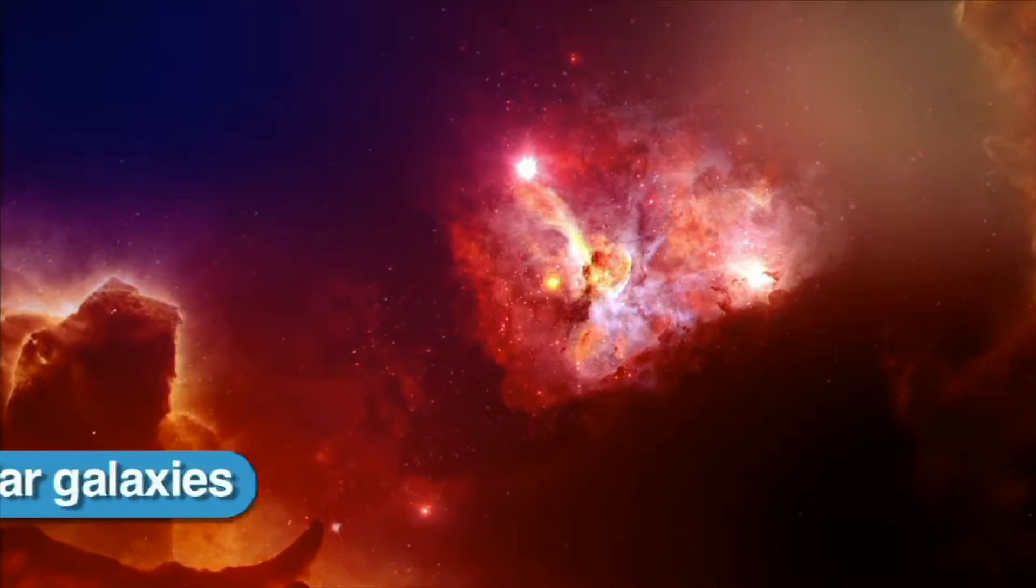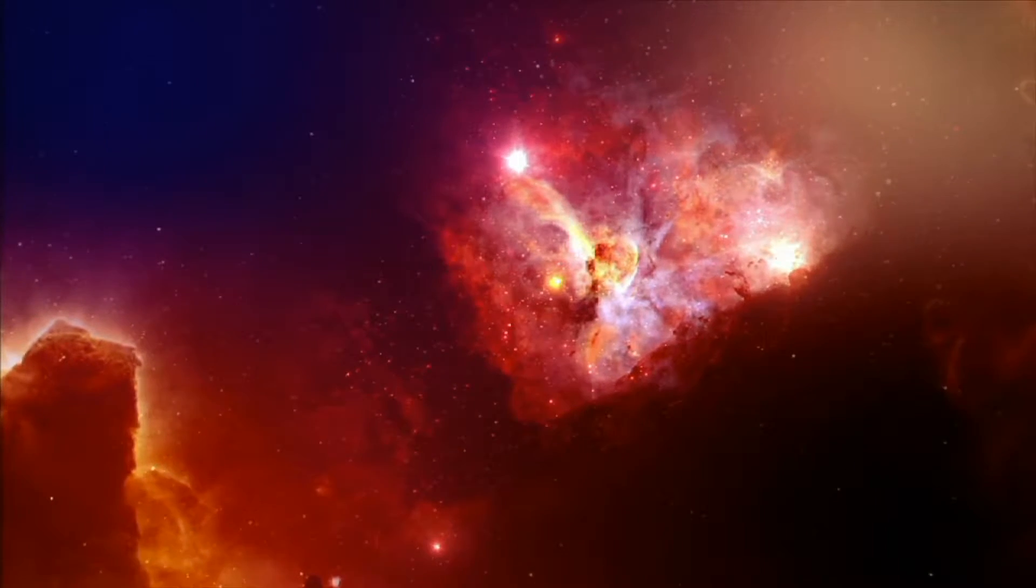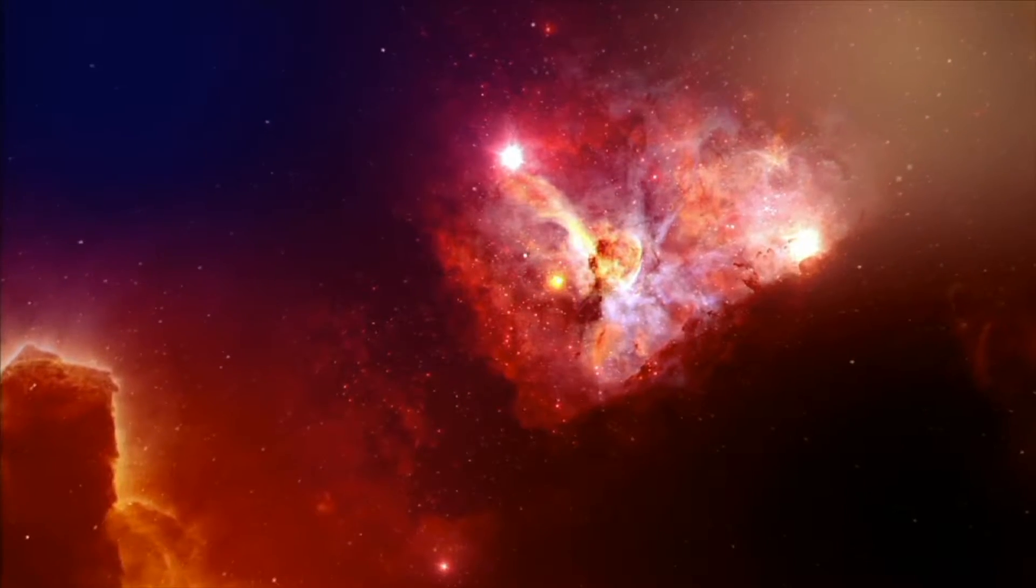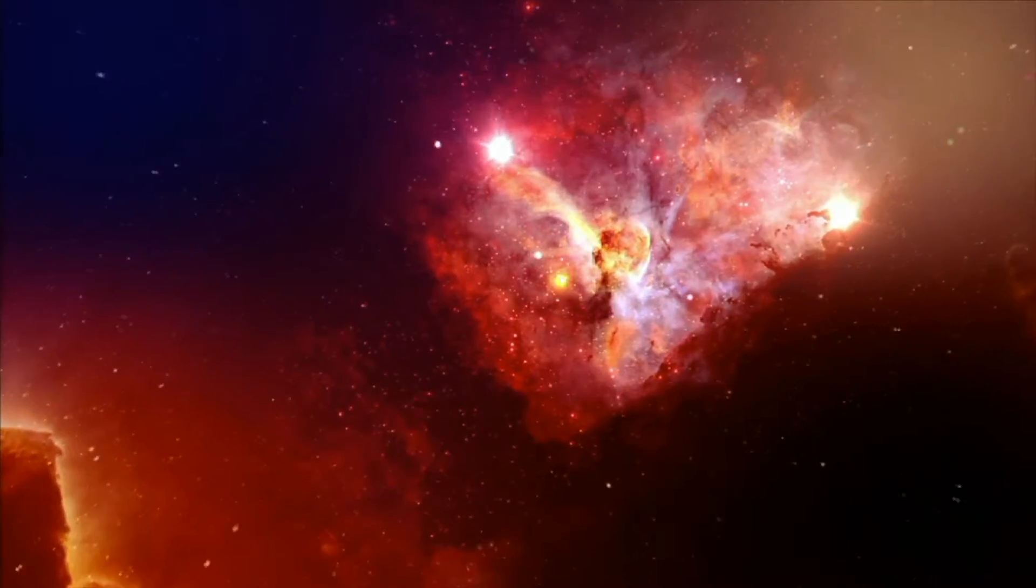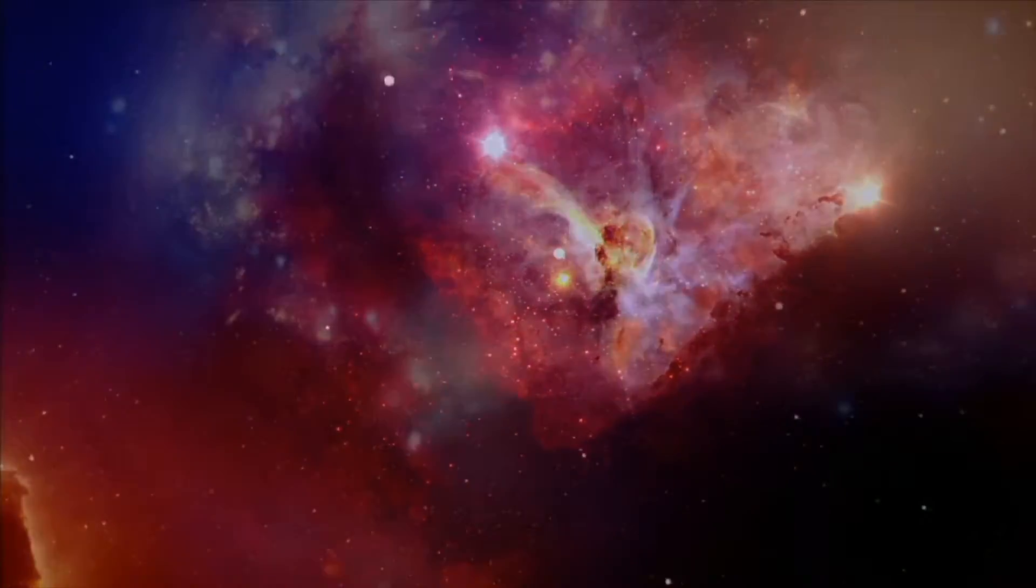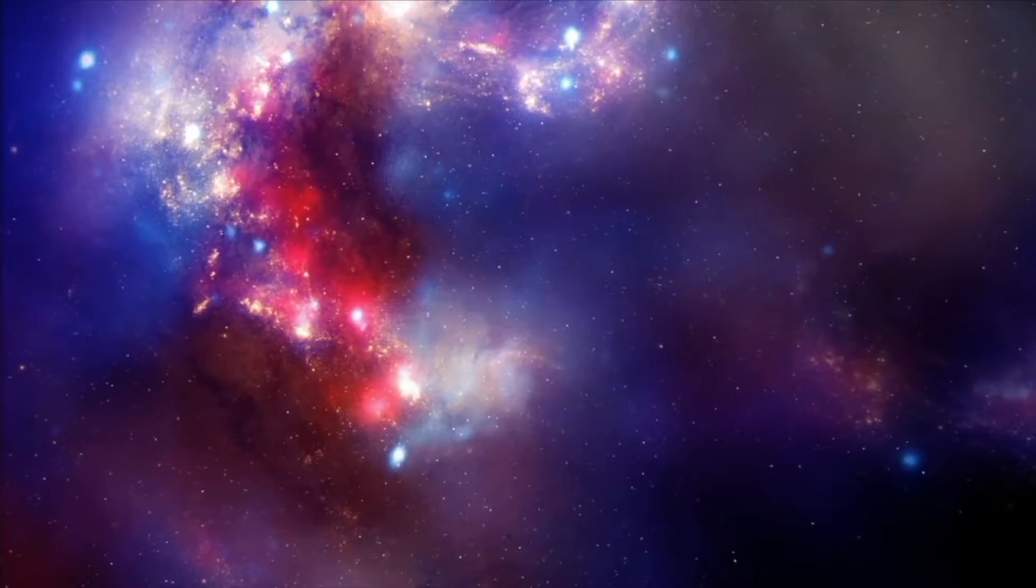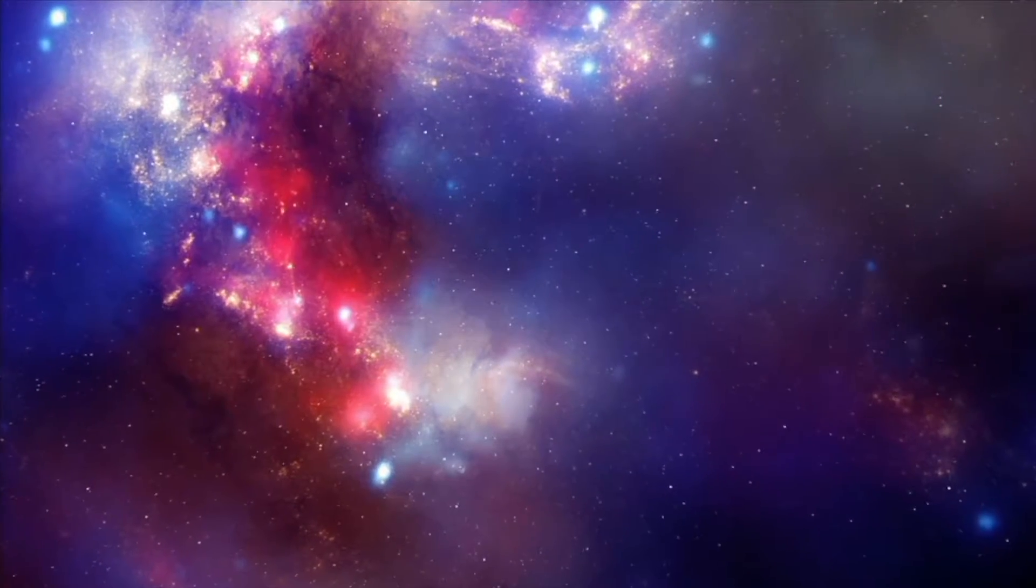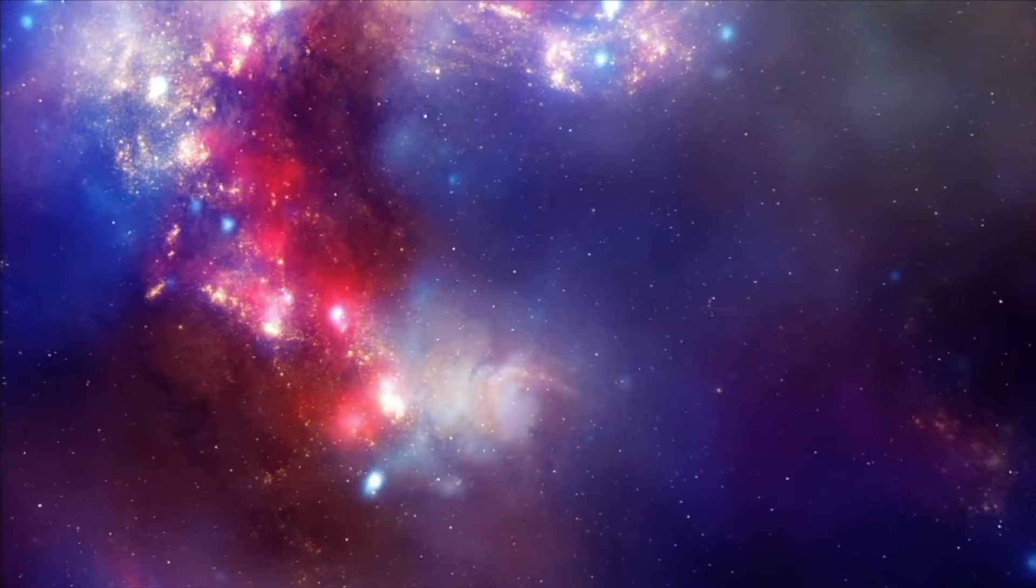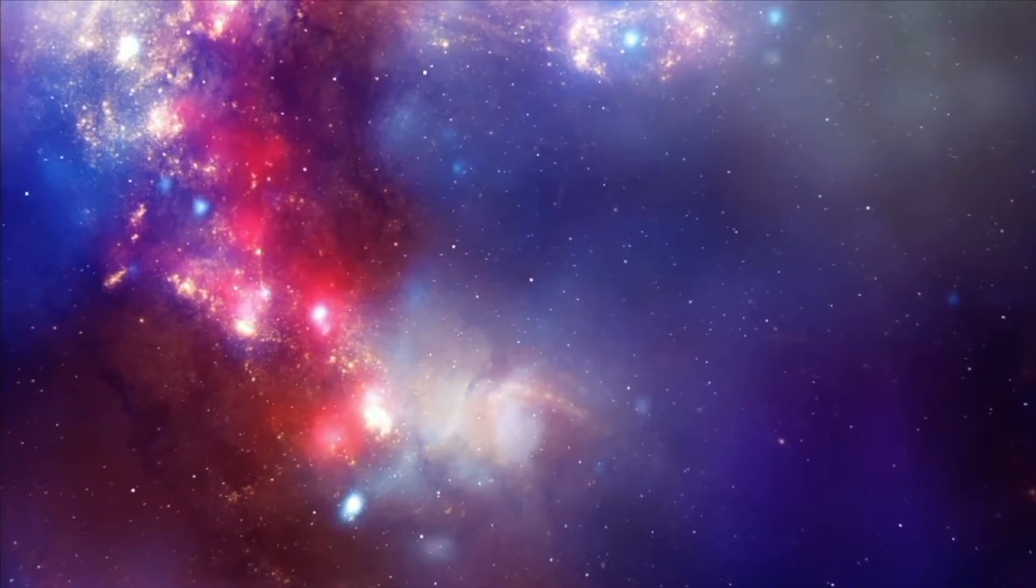Finally, irregular galaxies have no particular shape. They are among the smallest galaxies and are full of gas and dust. These galaxies have a lot of star formation because of the large amount of gas and dust. This can make them very bright. About 20% of all galaxies are irregular.